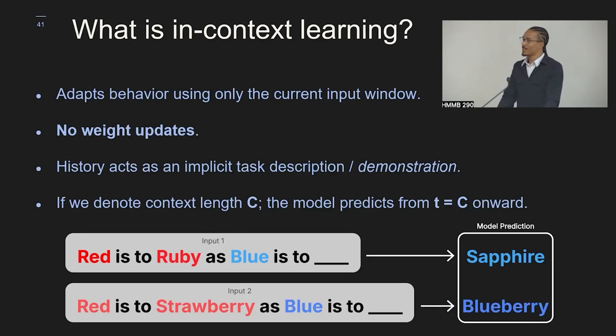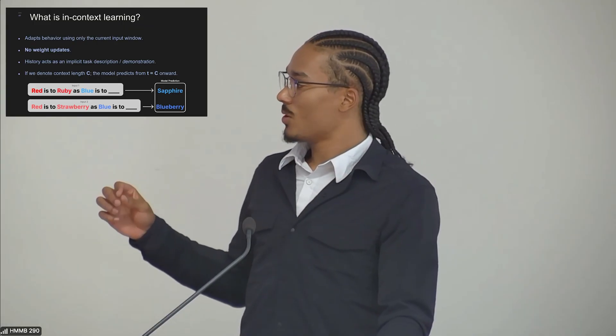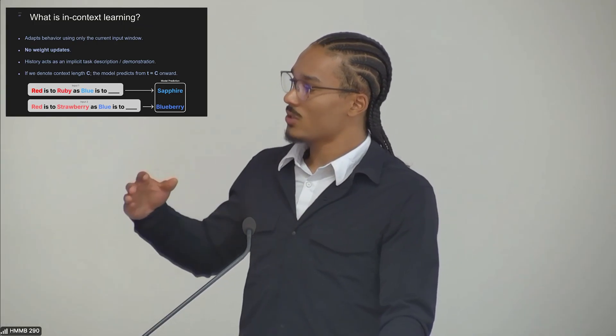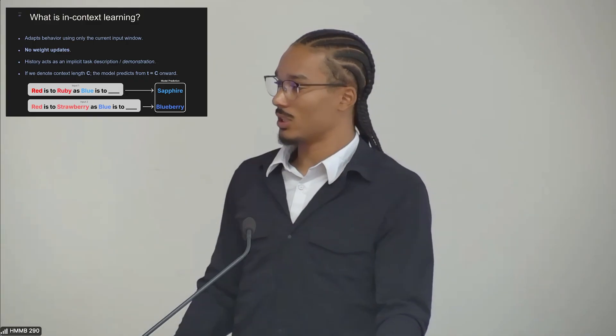So what is in-context learning? Many of us are familiar with transformer models trained on text. At the bottom, we have an example here. Red is to ruby as blue is to, and then the model would predict sapphire. And if you replace ruby with strawberry, the model would then predict blueberry. This shows that transformers, depending on the input, the context will be able to change what the model prediction is.